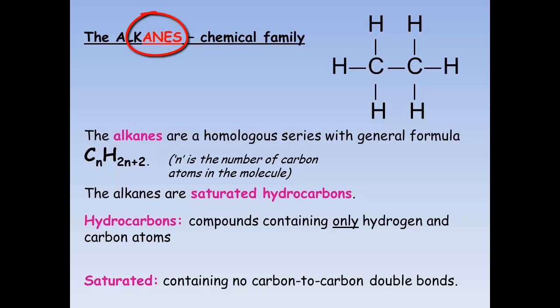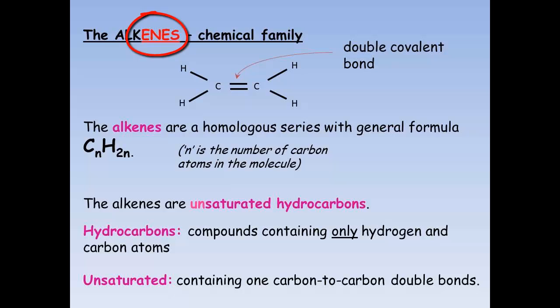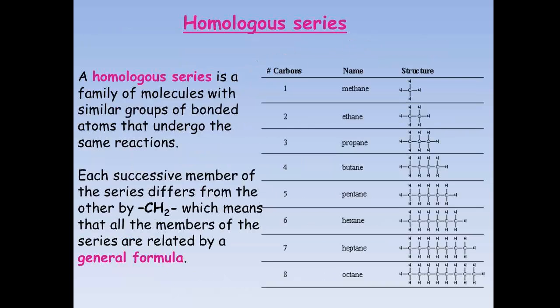One way to spot an alkane is that it will end in ane, A-N-E. One way to spot an alkene is it will end in ene, E-N-E. The two examples, ethane and ethene, belong to homologous series, which is a family of molecules with similar groups of bonded atoms that undergo the same reactions. Each one changes by simply adding another CH2. To make the next in the homologous series, simply add another CH2. Now we have butane.